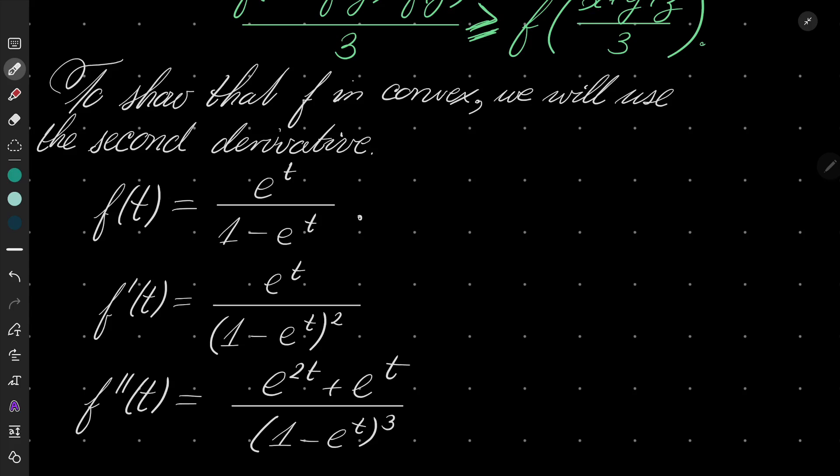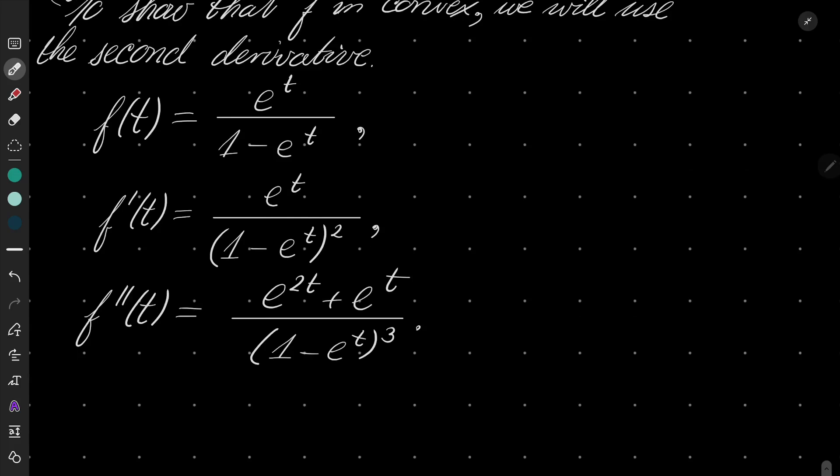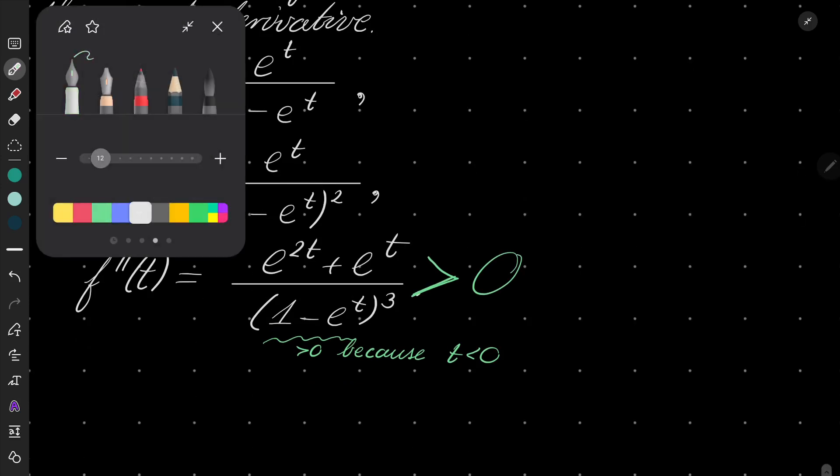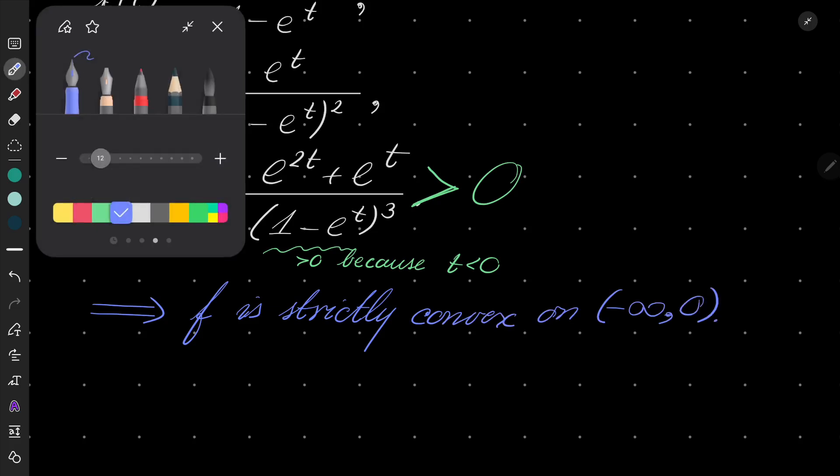After some simplifications, it's pretty easy to derive this second derivative. And now let's notice that since t is a negative number, our denominator is positive. So this part is positive because t is strictly less than 0. The numerator is obviously positive, so everything is strictly positive, which means by well-known fact from mathematical analysis that f is strictly convex on the set of negative numbers.